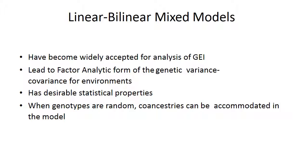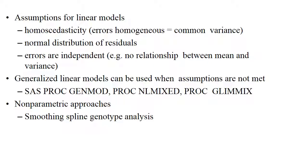The last model is the linear bilinear mixed model, which has become widely accepted for the analysis of G×E interaction. It leads to a factor analytic form of genetic variance-covariance for environments, which has desirable statistical properties. When genotypes are random, co-ancestrials can be accommodated in the model. Assumptions for the linear model include homogeneous errors, normal distribution of residuals and independent errors. Generalized linear models that can be used when assumptions are violated include SAS proc genmod and proc nlmixed. Non-parametric approaches like smoothing spline genotype analysis are also available.